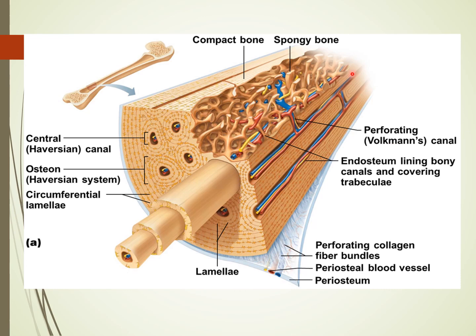Looking at compact bone in more detail: the spongy bone lines the medullary cavity inside, and perforating canals — also called Volkman canals — connect up all the central canals, which are also known as Haversian canals. Multiple osteons are visible in compact bone, each with their concentric lamellae.